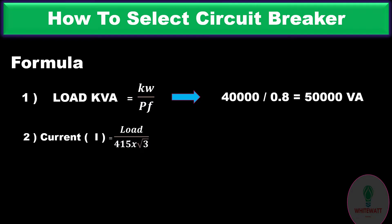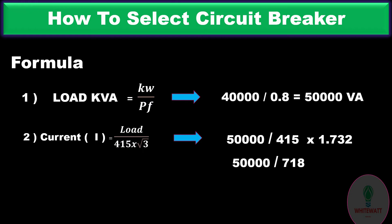For step two, we find the motor current. The formula is: current equals load divided by (voltage multiplied by √3). Putting in the values: 50,000 divided by 415 multiplied by 1.732, which gives 50,000 divided by 718. The answer becomes 70 ampere.